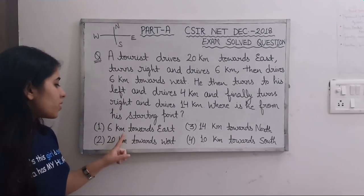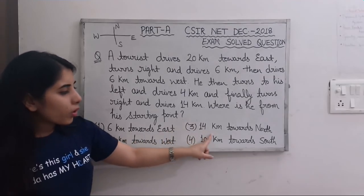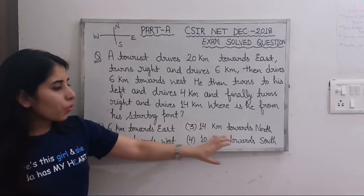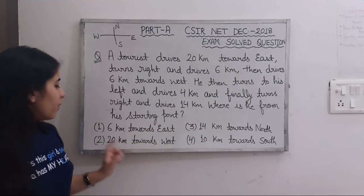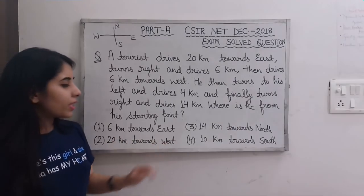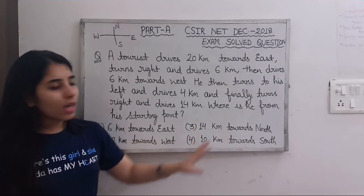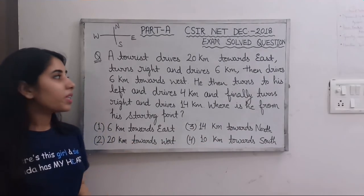The options given are: 6 kilometers towards east, 14 kilometers towards north, 20 kilometers towards west, and 10 kilometers towards south.